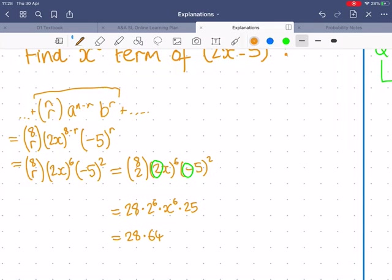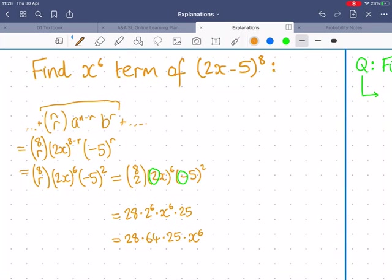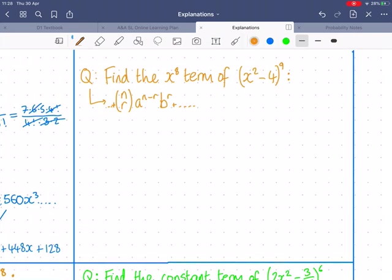So 28 times 64 times 25 times x to the power of 6 equals 44,800 x to the power of 6. And this may be bigger than other numbers in the exam, but this is actually something you always see in binomial expansion questions. You can very easily get 6, 7, or even 8 digit answers. Don't be alarmed. It's very normal.